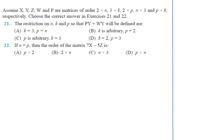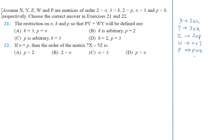Now coming to the next questions: questions 21 and 22 share the same assumption. The assumption is: X, Y, Z, W, and P are matrices of given orders. Matrix X is of order 2×n, matrix Y is of order 3×k, matrix Z is of order 2×p, matrix W is of order n×3, and matrix P is of order p×k. We have noted the given data.